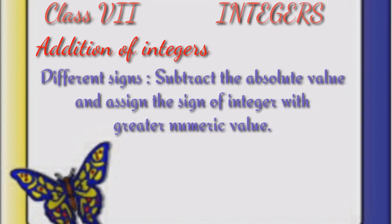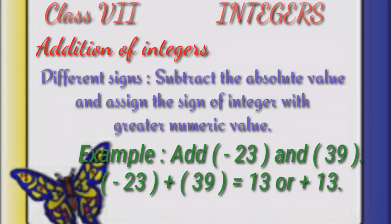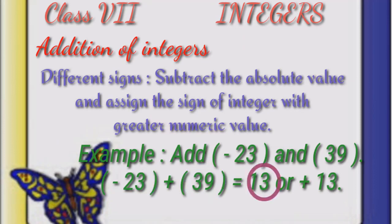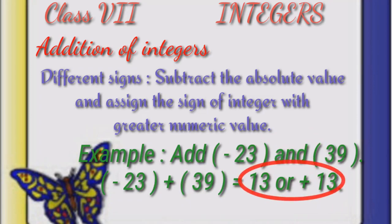What if we have to add integers with different signs — meaning one negative and one positive integer? In that case, we will subtract the absolute value and assign the sign of the integer with the greater numeric value. For example, if we have to add minus 23 and 39: minus 23 is a negative integer and 39 is positive. So we will subtract 39 minus 23, which is 16. And 39 is the greater integer with a positive sign, so the answer is plus 16, or 16.